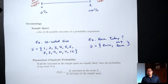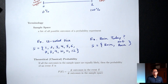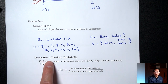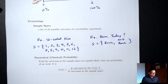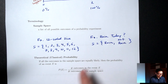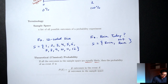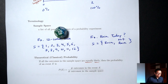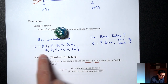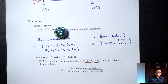So how do we actually compute probability? The formula here is for what's called theoretical or classical probability, and it really only applies to a situation where the outcomes in the sample space are equally likely. In the dice example, if this is a fair dice, then each of these numbers is equally likely to occur — that's what it means to be a fair dice. So this formula would apply to a dice situation.